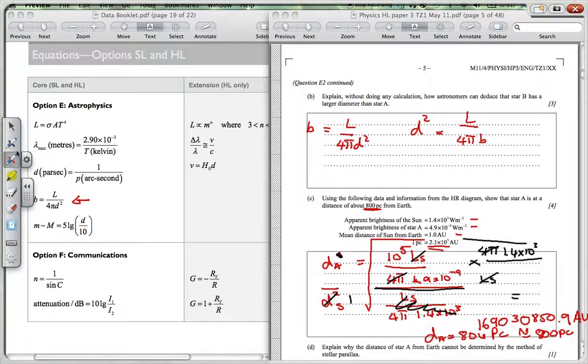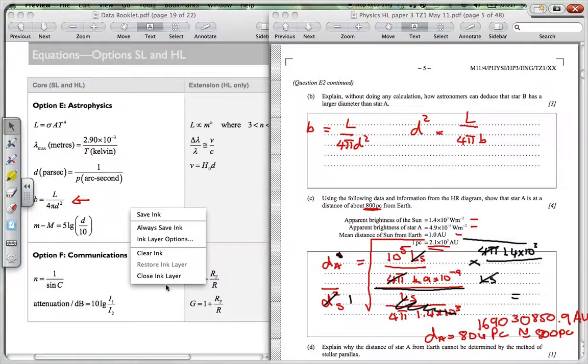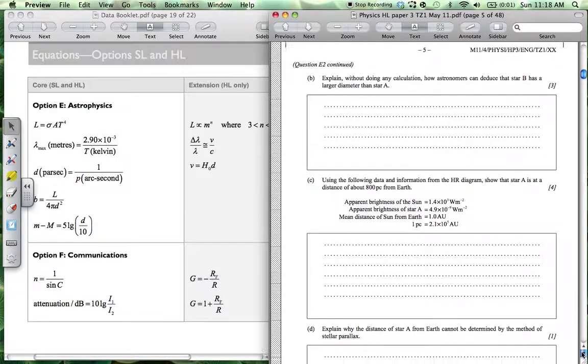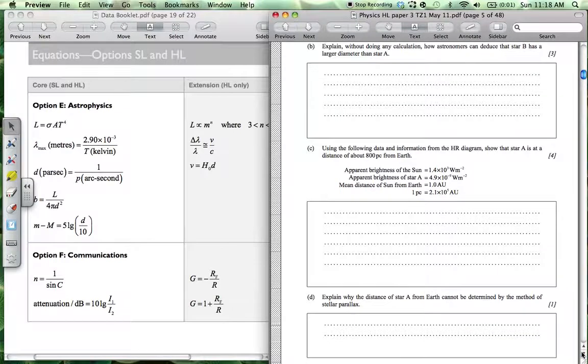And then finally, at the bottom for this question, it asks the question, explain why the distance of star A from Earth cannot be determined by the method of stellar parallax.